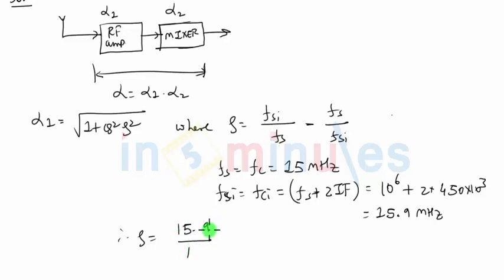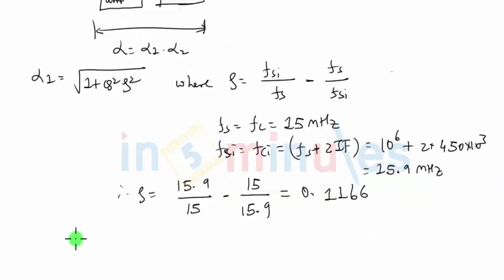So if I use these values, rho will become 15.9 megahertz upon FS, which is equal to 15 minus 15 upon 15.9. Megahertz will cancel out because it's a ratio, and rho will come out to be 0.1166.